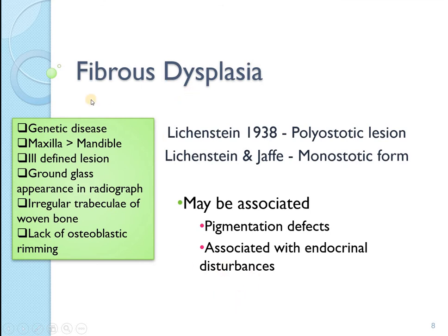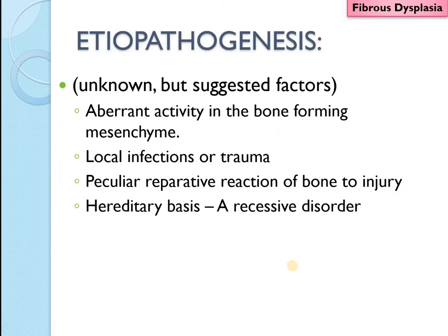Fibrous dysplasia was described in 1938 by Lichtenstein and Jaffe, who described both the polyostotic and monoostotic forms. It may be associated with pigmentation defects and endocrinal disturbances, giving rise to some syndromes. Although the exact etiopathogenesis is not fully known, there is a genetic basis to this lesion. Earlier it was thought to be due to apparent activity of bone-forming mesenchyme, or because of local infections or trauma.